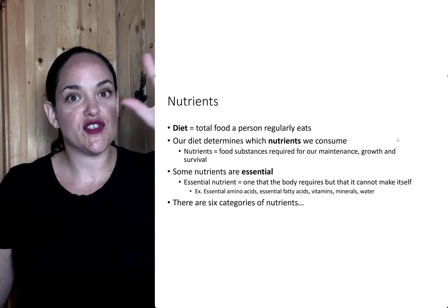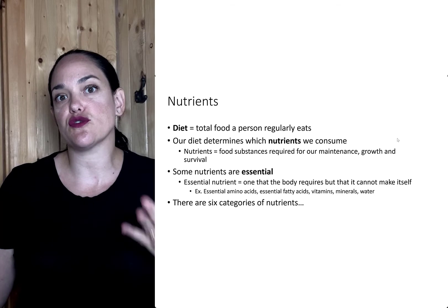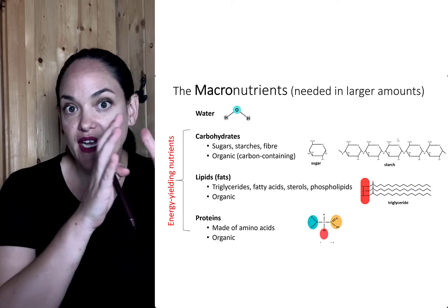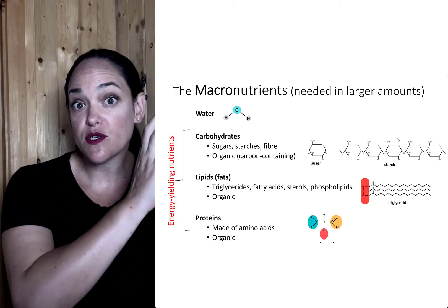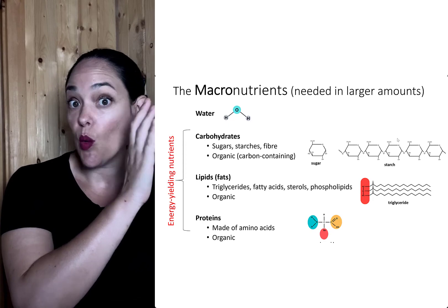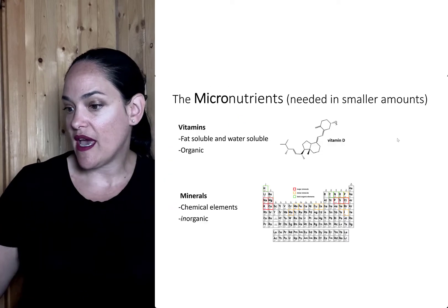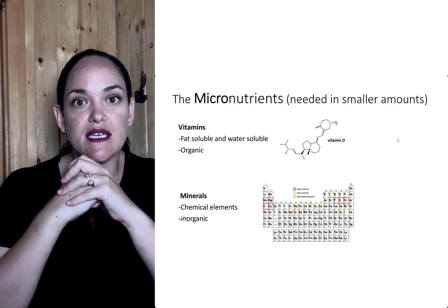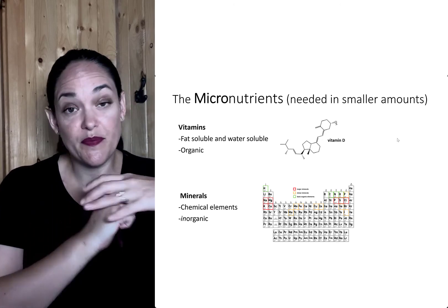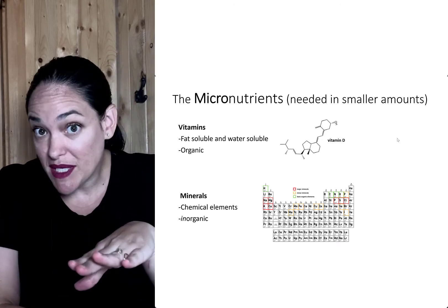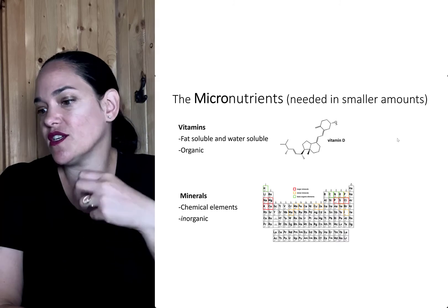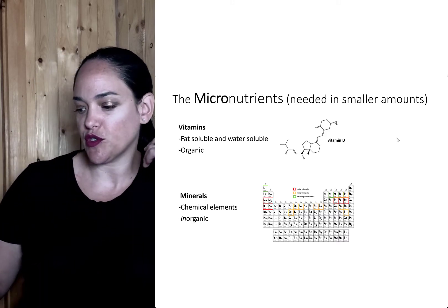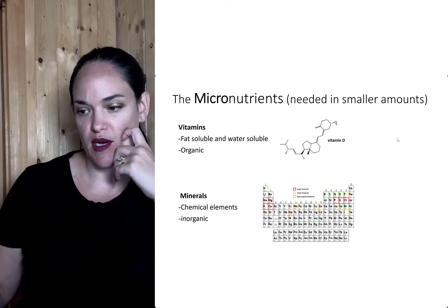There are six different categories of nutrients that we can take into the body. And we can divide these nutrients into the macronutrients, ones needed in higher amounts, and the micronutrients, ones needed in smaller amounts every day. That doesn't mean micronutrients aren't important — it just means we need smaller amounts of them in order to do their job.